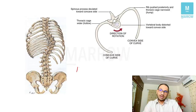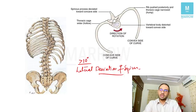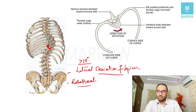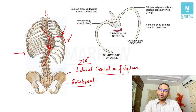Scoliosis is basically lateral deviation of the spine of more than 10 degrees. Scoliosis also has a rotational component — the vertebrae are rotated, and because of this rotation there will be a protuberance or abnormal protuberance of the ribs. On the convex side of the scoliotic spine, you will notice protruding ribs, which is called the rib hump.